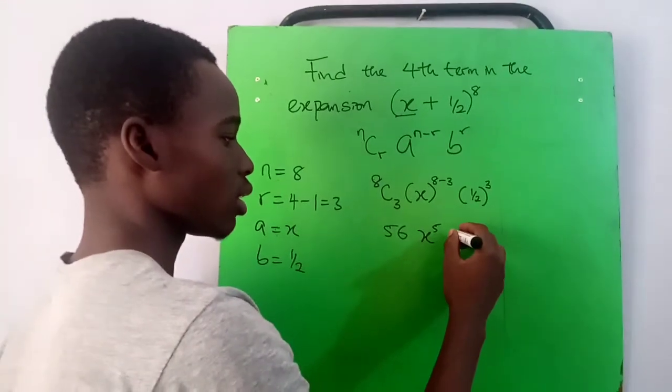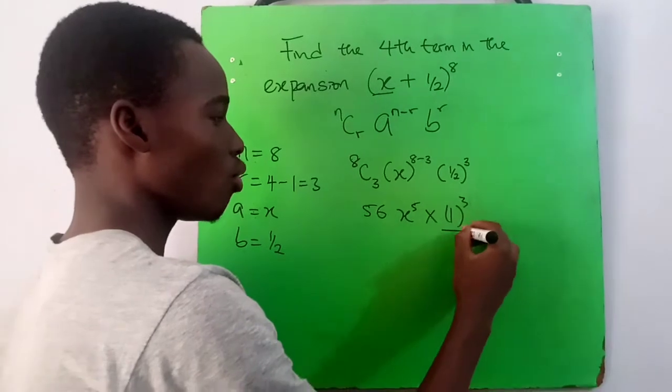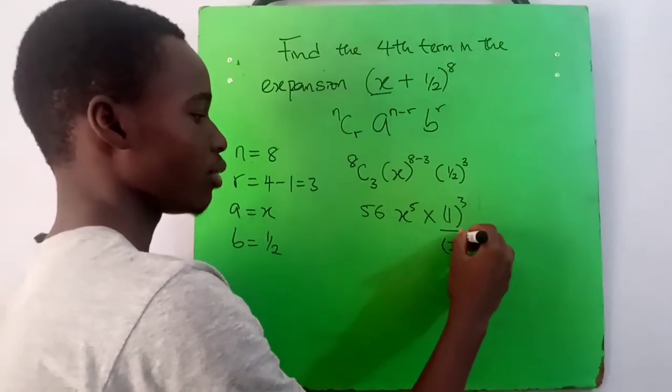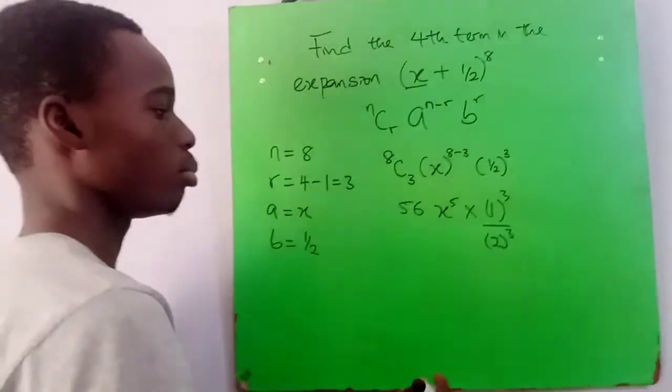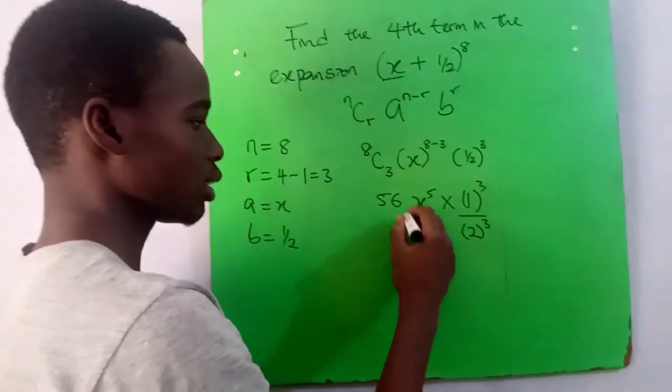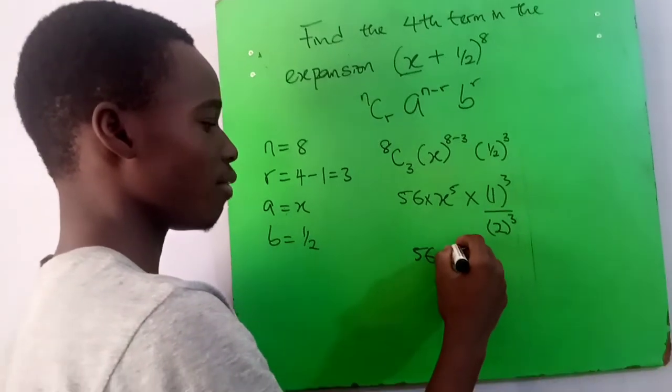So it becomes one raised to the power of three over two raised to the power of three. This three is affecting everything, it's affecting both the one and both the two. So we have 56 times x raised to the power of five times one raised to the power of three, which is one, over two raised to the power of three, which is eight.